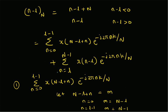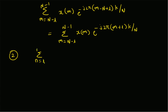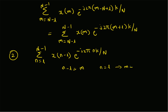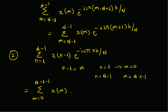Now the second summation is summation n equal to l to N minus 1 of x of n minus l times e power minus j 2 pi n k by capital N. Again we write m equal to n minus l. When n equals l, m equals 0, and when n equals N minus 1, m equals N minus l minus 1. So the limits become m equal to 0 to N minus l minus 1, and n is replaced by m plus l, giving e power minus j 2 pi times m plus l times k divided by N.